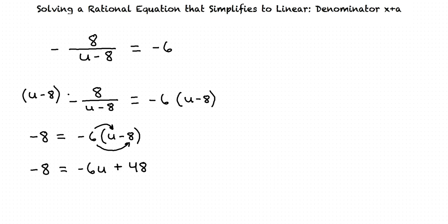What should we do next? We need to isolate u to one side of the equation, so we'd subtract 48 from both sides of the equation. Yeah, I think you're getting the hang of it. We now have negative 56 equals negative 6u. Our next step is to divide both sides by negative 6. And we are left with u equals 56 over 6.